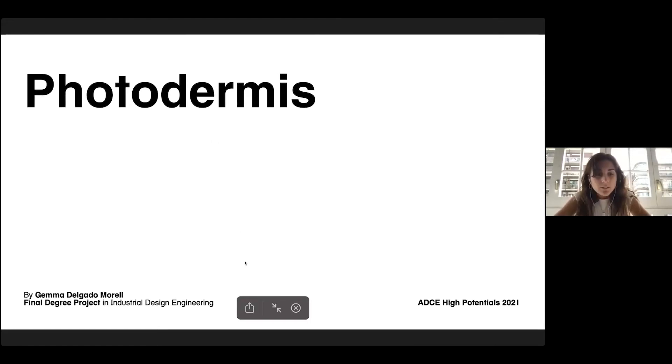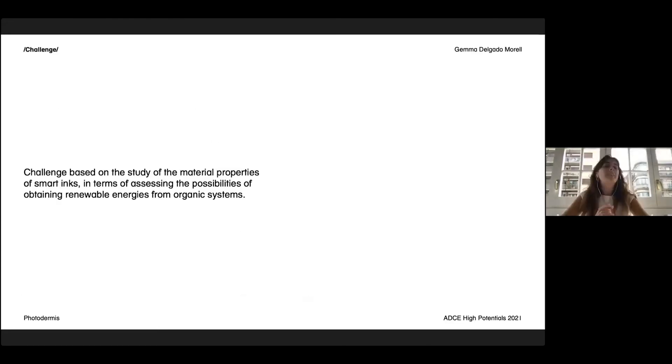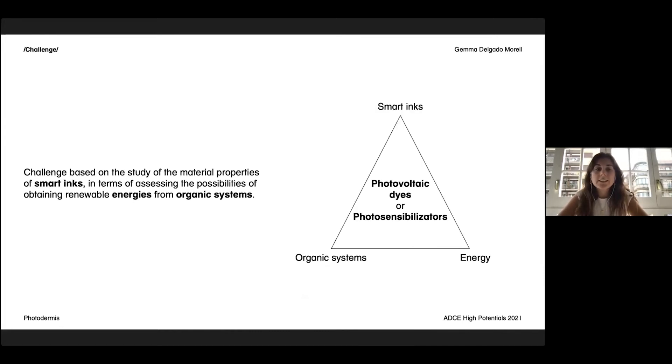My project, the challenge is based on the study of material properties of smart things in terms of assessing the possibilities of obtaining renewable energies from organic systems. From this challenge, there are three keywords for me which led me to the knowledge of photovoltaic dyes or photosensitizers, which are the materials that my project is basically based on.